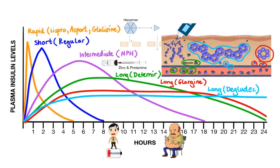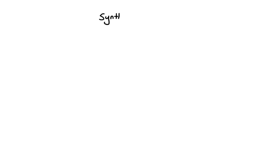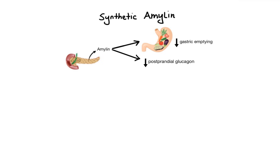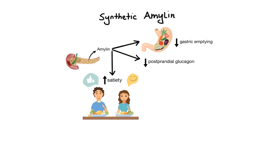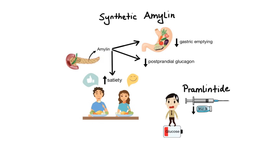Now let's talk about a different type of injectable analog used in treatment of diabetes — synthetic amylin. Pancreatic beta cells not only secrete insulin but also a peptide hormone called amylin, whose job is to delay gastric emptying, suppress postprandial glucagon secretion, and promote satiety. The only amylin mimetic currently available is pramlintide. One of its biggest benefits is that it allows insulin doses to be reduced; however, the risk of hypoglycemia is still present. Other common side effects include nausea and modest weight loss.